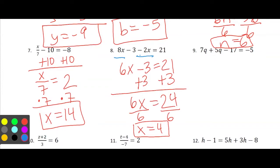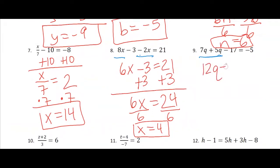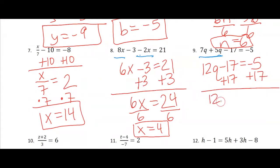I'm going to combine my like terms here, and I get 12Q minus 17 equals negative 5. So I'm going to add 17 to both sides — 12Q equals 12. Divide both sides by 12, and I get Q equals 1.